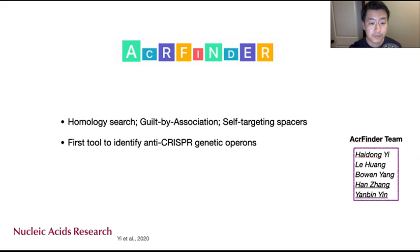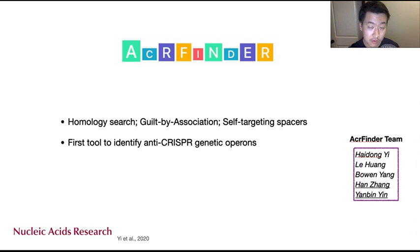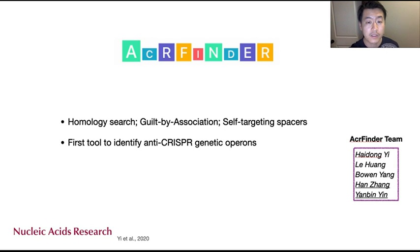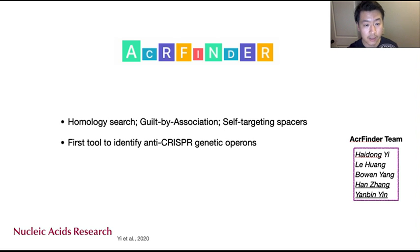We built the tool ACR-Finder by combining all three bioinformatic approaches: the homology search, the guilt-by-association search, and the self-targeting spacer approach. Our tool is the first to combine these approaches and also the first to identify anti-CRISPR genetic operons. This tool was published last year in Nucleic Acids Research.